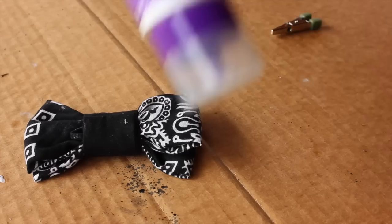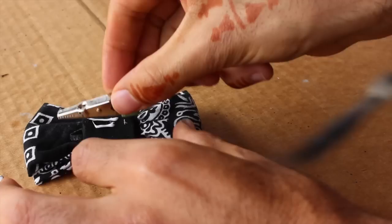Now, the very last step is to glue your alligator clip to the back of your bow tie with a little bit of Aileen's Fast Grab Tacky Glue.